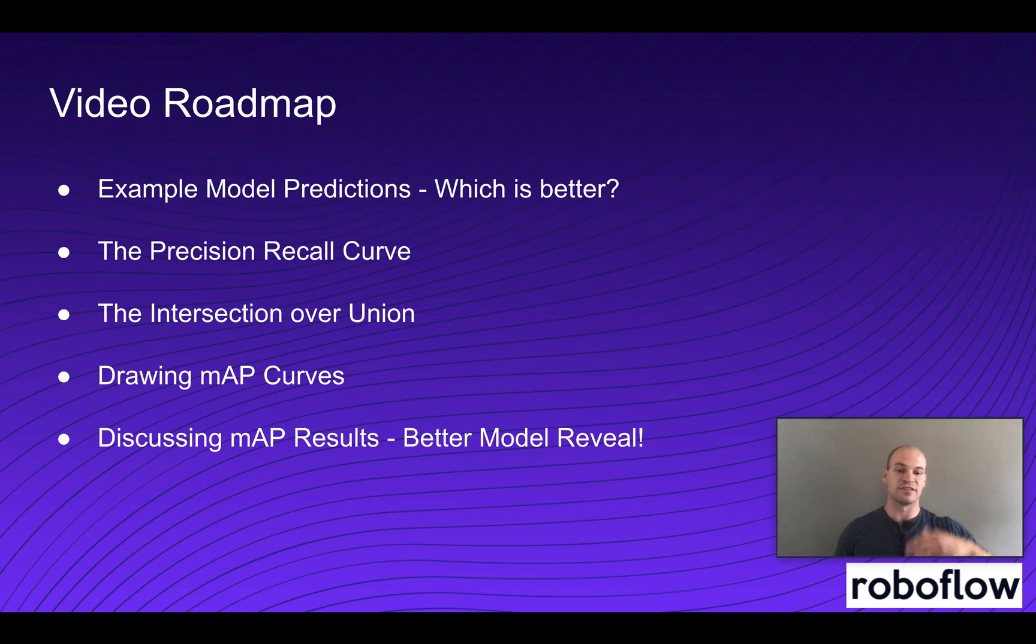After that, we're going to start to build some technical infrastructure by looking at what the precision recall curve is and how we might calculate it. After that, we're going to look at the intersection over union metrics so we can determine when we're making object detection detections, which one is counted as correct and which one is not.